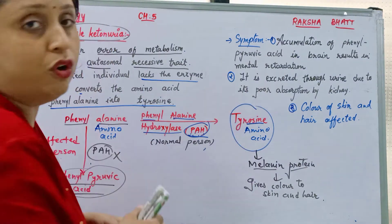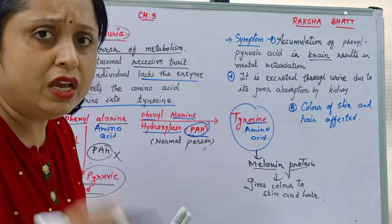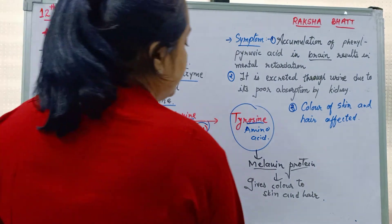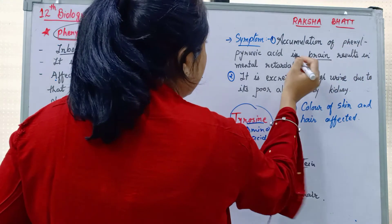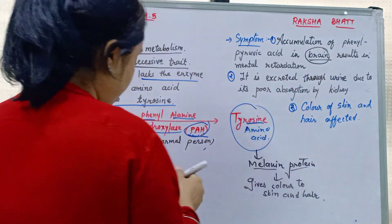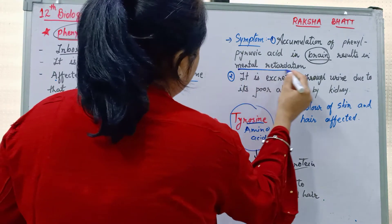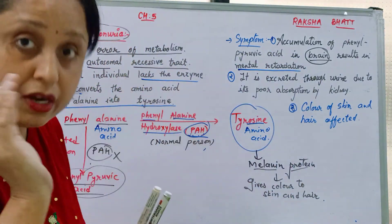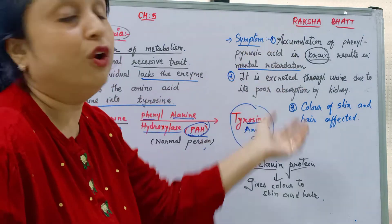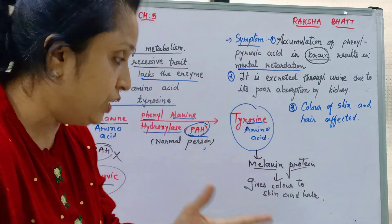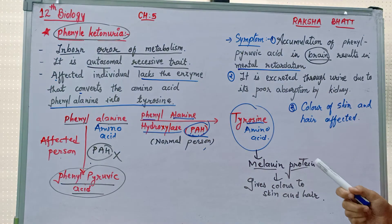The accumulation of phenylpyruvic acid in the brain results in mental retardation. The person becomes mentally retarded.